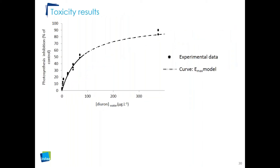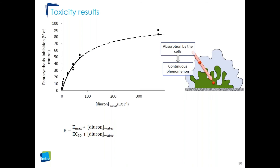For the toxicity results, photosynthetic inhibition as a percentage of control is shown as a function of diuron concentration in the water in micrograms per liter. Points represent experimental data and the curve represents the Emax model. The model fits the data well. The toxic impact is continuous, meaning there is absorption by the cell as a continuous phenomenon.